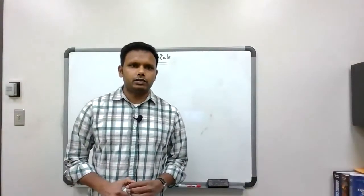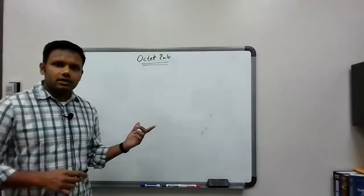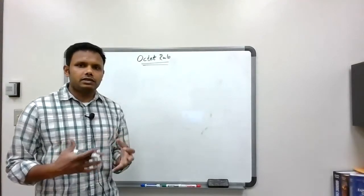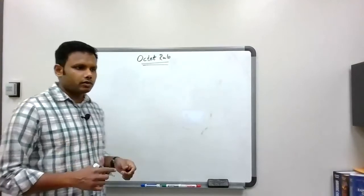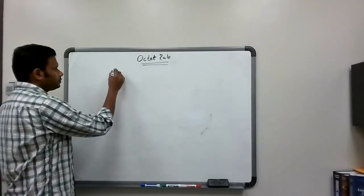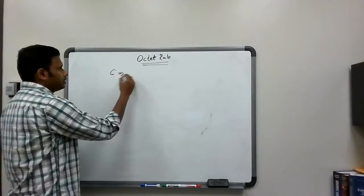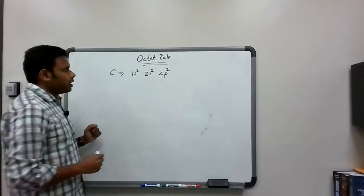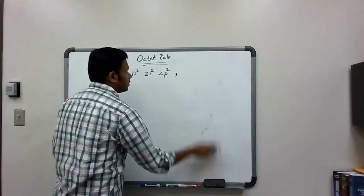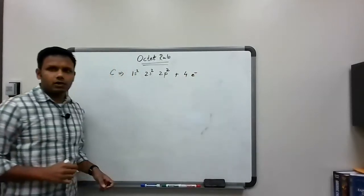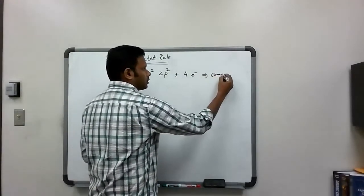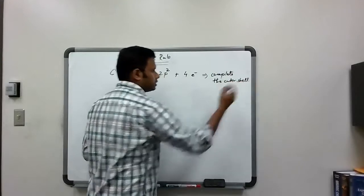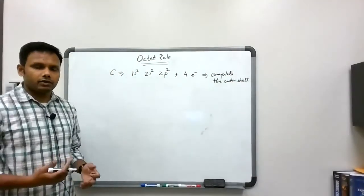In this video we're going to discuss how different elements attain the octet rule. Since we're discussing organic chemistry, let's start with carbon because that's the backbone of organic compounds. Carbon has an electronic configuration of 1s2, 2s2, and 2p2, and it needs four additional electrons to complete the outer shell.